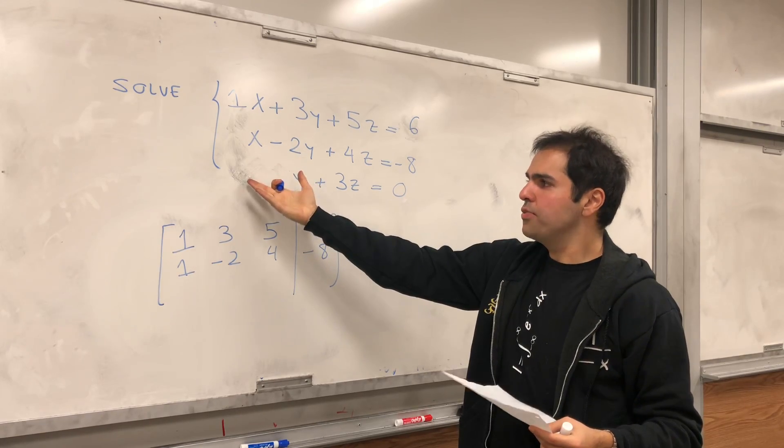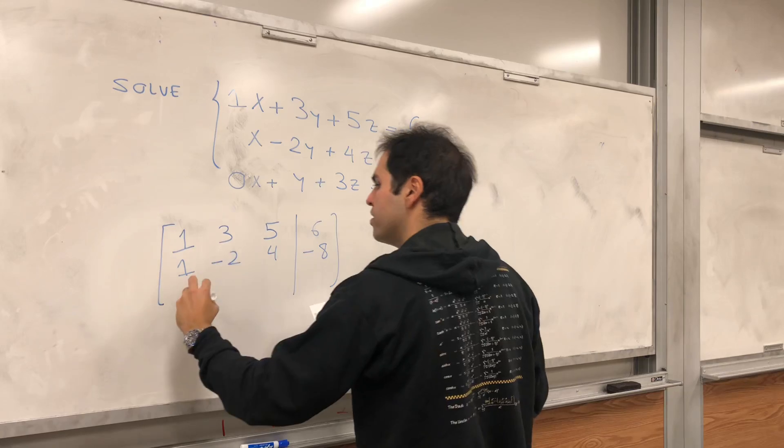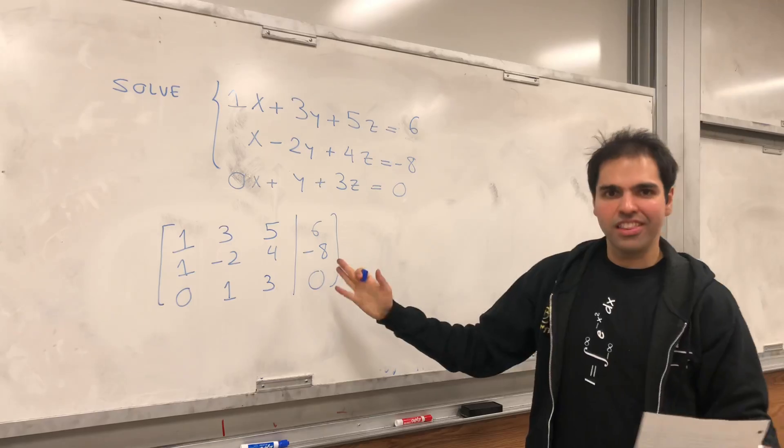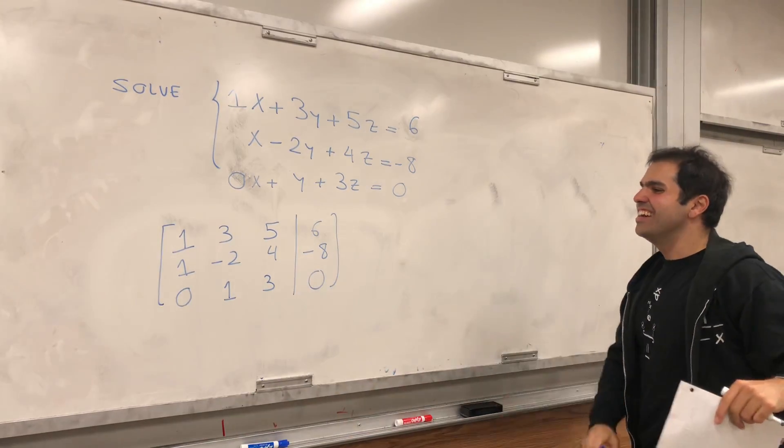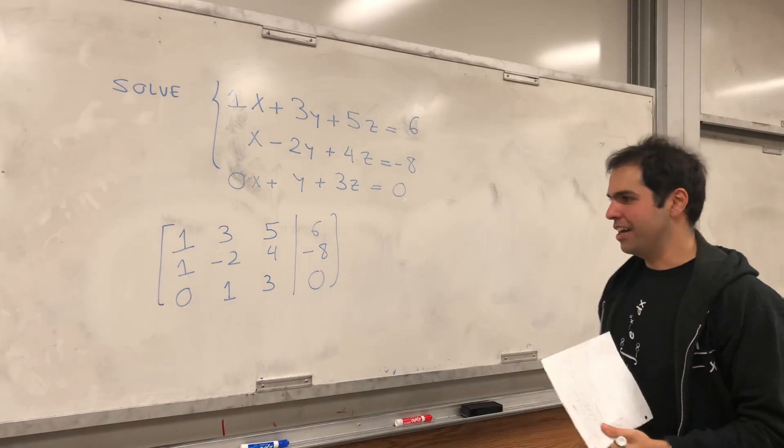And notice, what do you put here? Well, notice this is really 0x. So, you put 0, 1, 3, 0. And again, this is a matrix. Whoosh! Okay? Just, for now, a table of numbers, but then we'll bring it back to life.